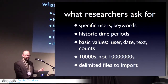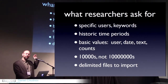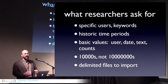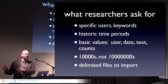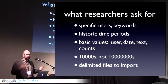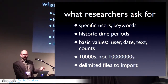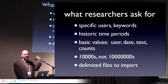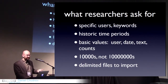Talking to Professor Gross and some of her colleagues, we learned they're looking for very specific things. They want to be able to pull up certain users and search by certain keywords, and they want to do it particularly for historic time periods — like going to look at how the word was spread about the Green Revolution in Iran, or the Arab Spring, or around a traumatic or positive event. They want basic values like the text, when it was, and certain counts like whether it was retweeted or not. They're dealing with volumes of thousands to tens of thousands, not tens of hundreds of millions, and they ultimately want this data in some sort of delimited format.